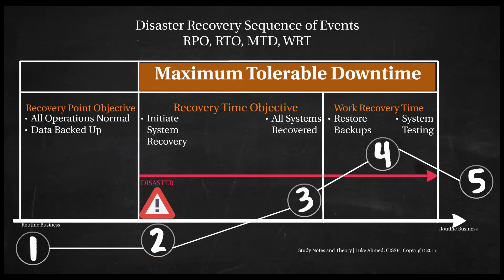Step three is when systems are recovered and we are just about to enter the work recovery time. Step two is the initiation of disaster recovery, and step three is the immediate recovery from the disaster. I say immediate because there's a lot more we have to do right after all systems are recovered, which we go over in step four. So if a firewall is down, the firewall is brought back online — but just because that happens doesn't mean everything is fine. We still have to test everything out and make sure we have our backups, and that's what comes into play in step four.